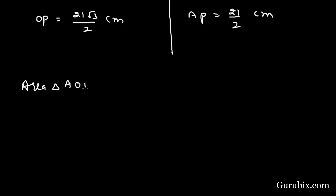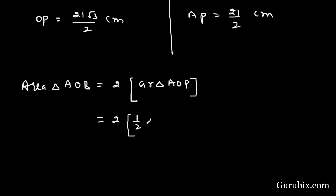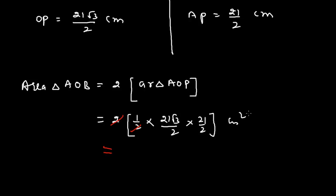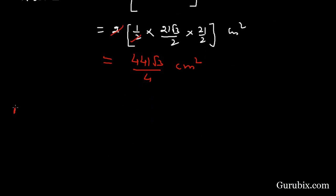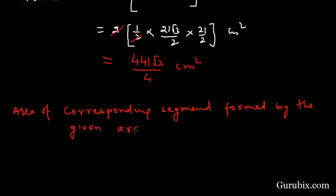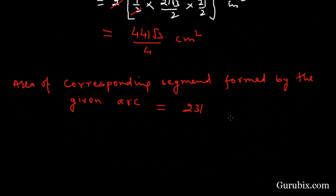Now we can find the area of triangle AOB. It will be twice the area of triangle AOP. The area equals half times base times height: half times 2 times (21√3/2) times (21/2) centimeter square. Cancelling gives 441√3 over 4 centimeter square. Therefore, the area of the corresponding segment formed by the given arc equals the area of the sector minus the area of triangle AOB: 231 centimeter square minus 441√3 over 4 centimeter square. This is the solution of the question.